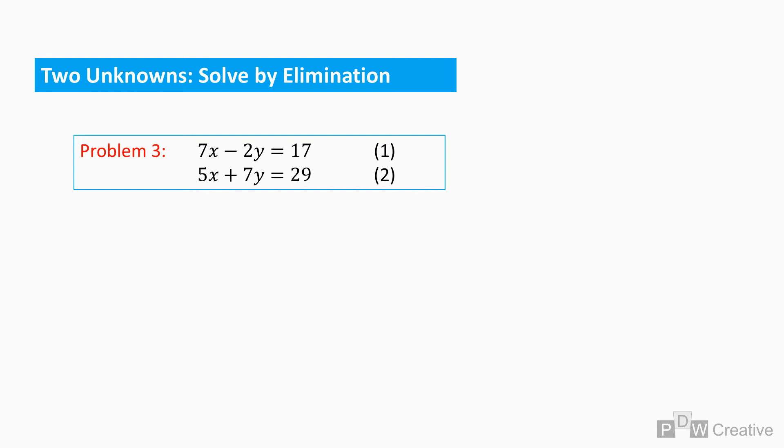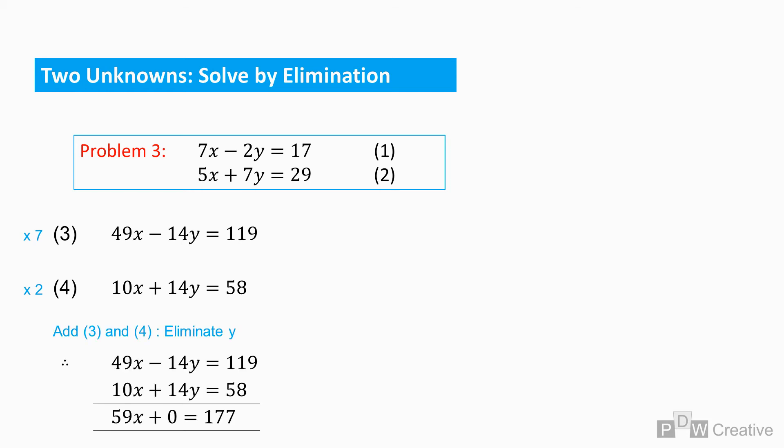So now let's find x and y for problem three using the elimination method. We can start by multiplying the equations as seen before to balance y. And then by adding equations three and four, we can eliminate y. And by forming equation five, we can now solve for x. Reworking for x, we find that x equals three.